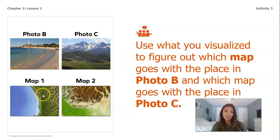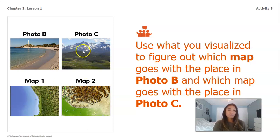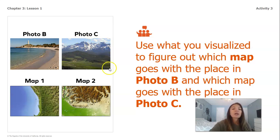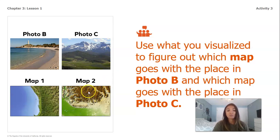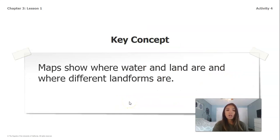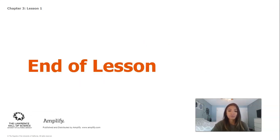So let me just double check that photo C and map two match up. In photo C, I'm going to be looking for highland because I can see those mountains in the background — it's actually very high highland. If I look at map two, I can see that there's a lot of very highland because I can see the brown around it. So I know that photo C is also going to match up with map two. Our key concept from today is that maps show where water and land are and where different landforms are. I look forward to seeing you guys back here for lesson two.